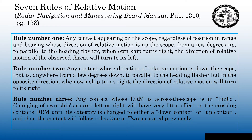There are seven rules of relative motion. These are published in the United States publication, Radar Navigation and Maneuvering Board Manual, Publication 1310, on page 158. There are seven rules and I'm not going to read every single rule to you. You may pause the video and read them, but I will read them when I explain each rule to you individually.